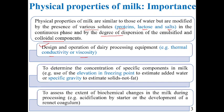Second, physical properties help in determining the concentration of specific components in milk. For example, if you want to determine added water content in milk, the elevation in freezing point is the physical property that helps. Similarly, to estimate SNF content in milk, specific gravity is the relevant physical property.